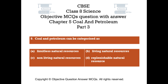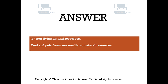Question number 9. Coal and petroleum can be categorized as: Option A: Limitless natural resources. Option B: Living natural resources. Option C: Non-living natural resources. Option D: Replenishable natural resource. The right answer is Option C. Coal and petroleum are non-living natural resources.